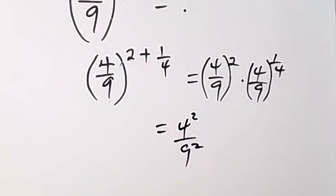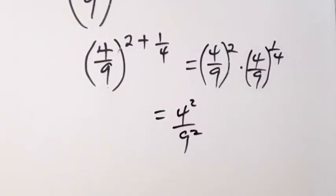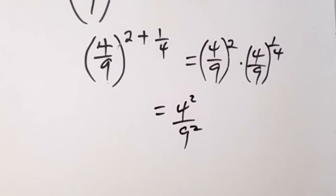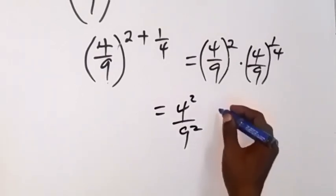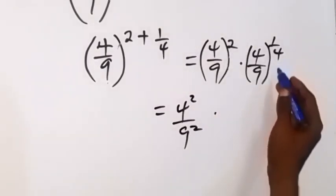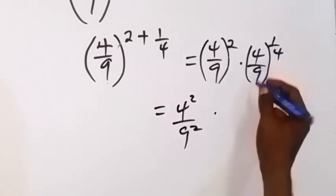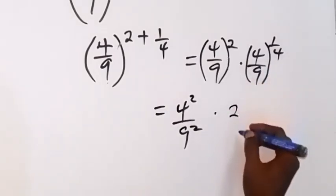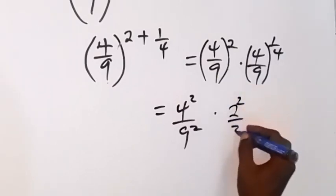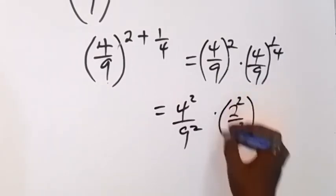And from there, on this side, we have this as we can write what is inside as 2 squared over 3 squared, then all raised to power 1/4, because 2 squared is 4 and 3 squared is 9.